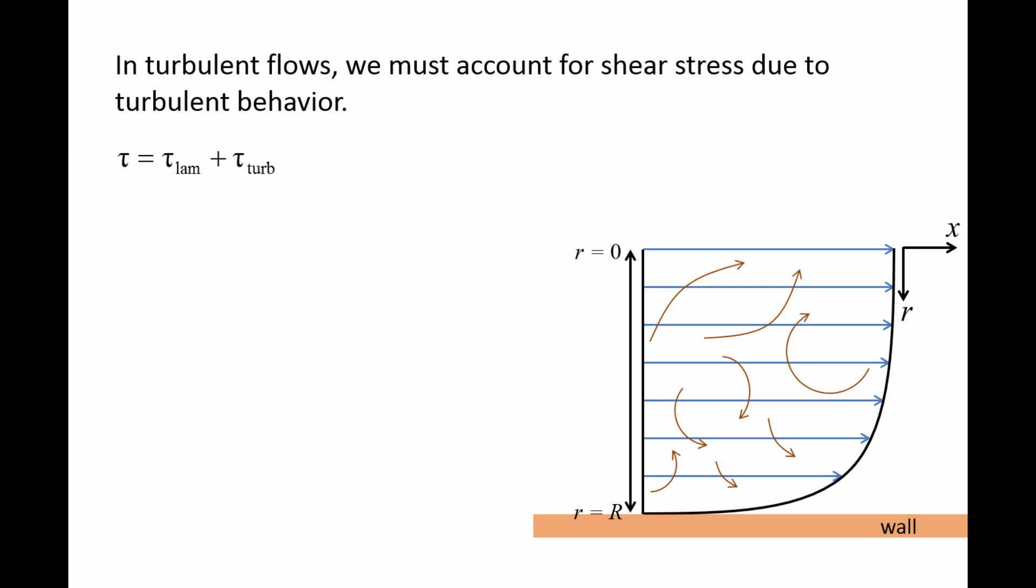However, for turbulent flows, there exist eddies of various sizes that add additional shear stress. We can write the total shear stress tau as a sum of the laminar shear stress tau_lam, which we already have an expression for, and the shear stress related to the turbulent behavior of the flow, tau_turb, which we do not have an expression for yet.